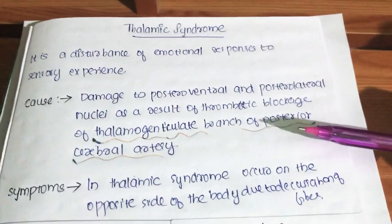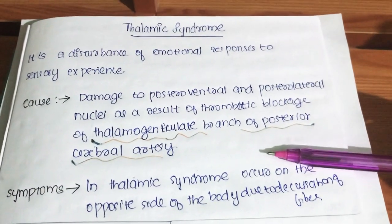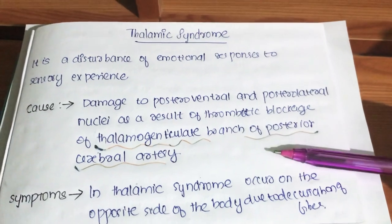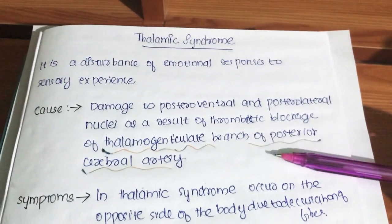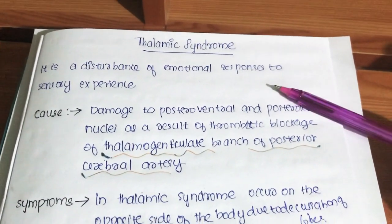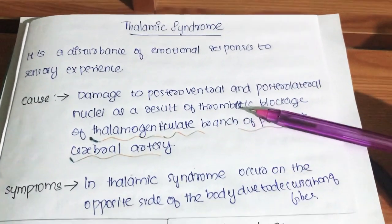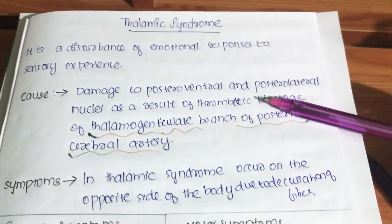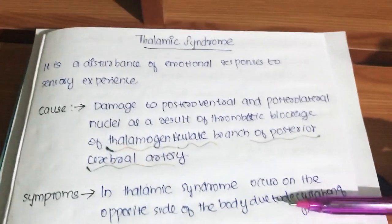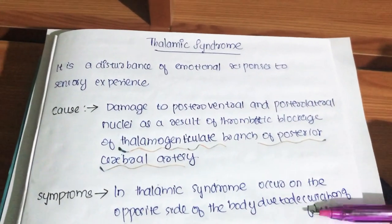To simplify: if there is any blockage in the thalamogeniculate branch of the posterior cerebral artery, it will lead to thalamic syndrome, because it damages the posteroventral and posterolateral nuclei.